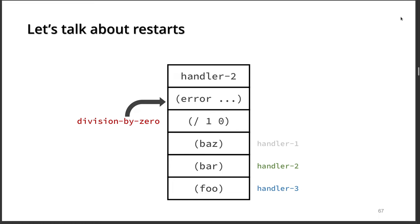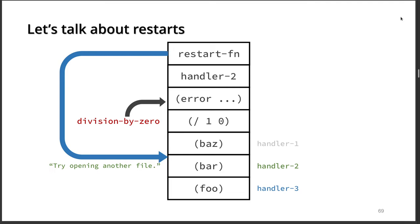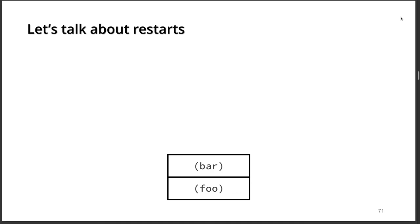These two mechanisms tie into one another, since handler number two can also, just like the debugger, compute the restarts available at any given time. After computing these restarts, it attempts to invoke the 'try opening another file' restart. The invocation looks like just another function call, since the restart function is just another function, and this function performs a non-local jump into the proper place on the stack. The non-local jump is performed, and execution can continue.